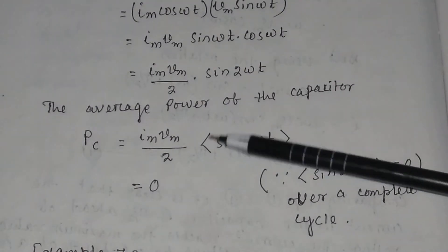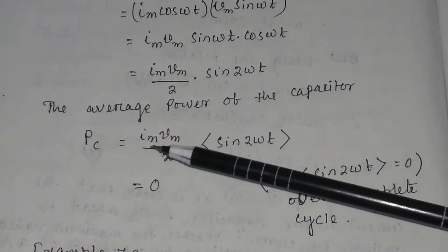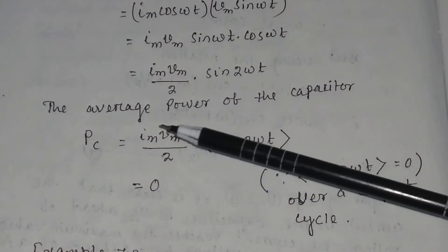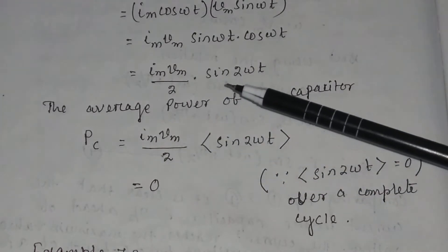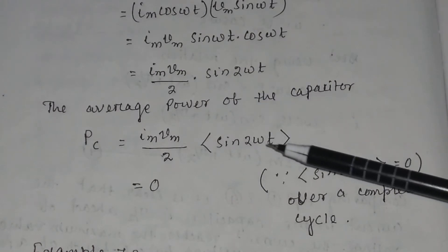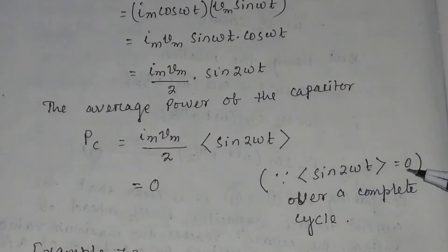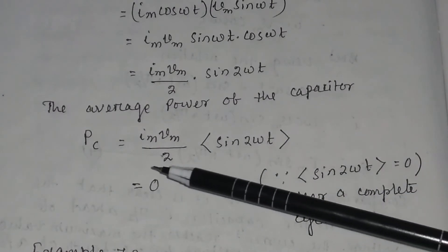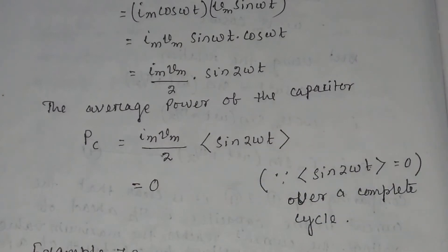The average of sin(2ωt) over a complete cycle is zero. So the average power of the capacitor is equal to zero.